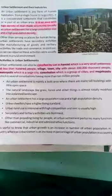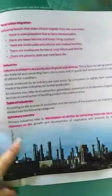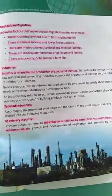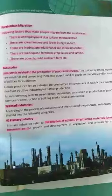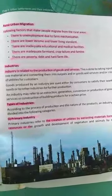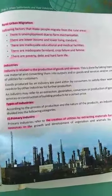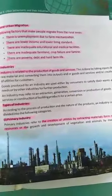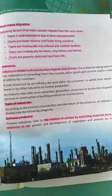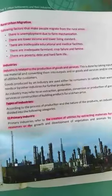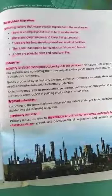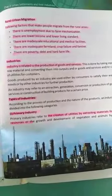On page number 99, rural-urban migration — we can see the factors due to which people migrate from villages to cities. These factors are: unemployment, lower income, and lower living standard, inadequate educational and medical facilities, inadequate farmland, crop failure and famine, poverty, debt, and hard farm life.